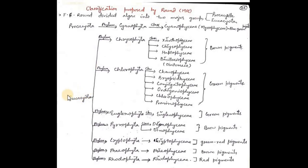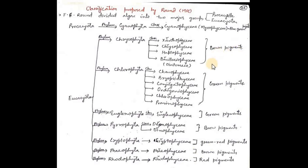The second major group is Eukaryota, which Round further divided into eight phyla: Chrysophyta, Chlorophyta, Euglenophyta, Pyrrophyta, Cryptophyta, Phaeophyta, and Rhodophyta. Each is further divided into classes with their dominating pigments mentioned. Earlier classification was based only on a single character — the color of the thallus — that means pigment only. So this is the classification proposed by Round.